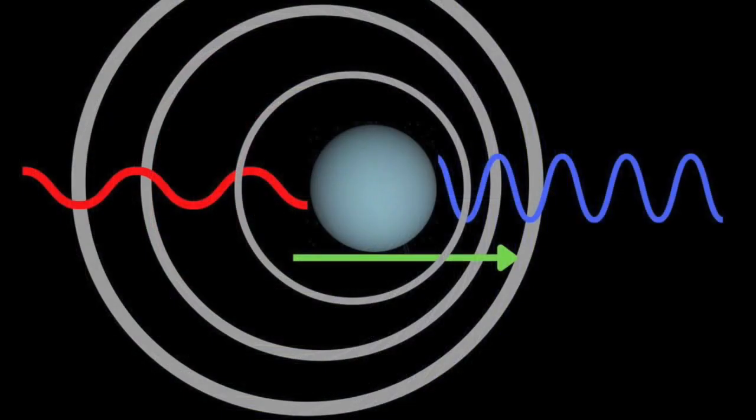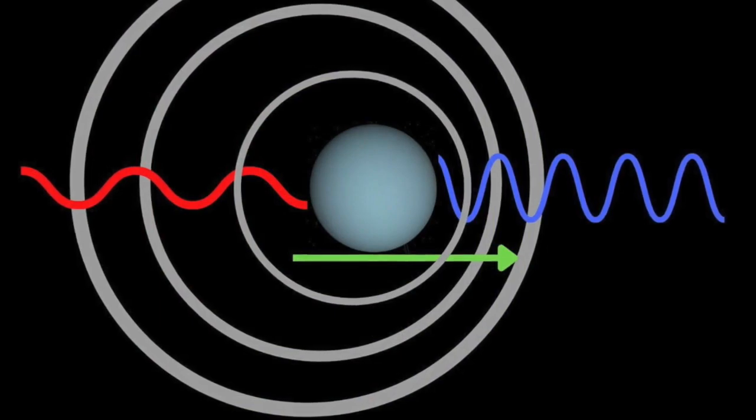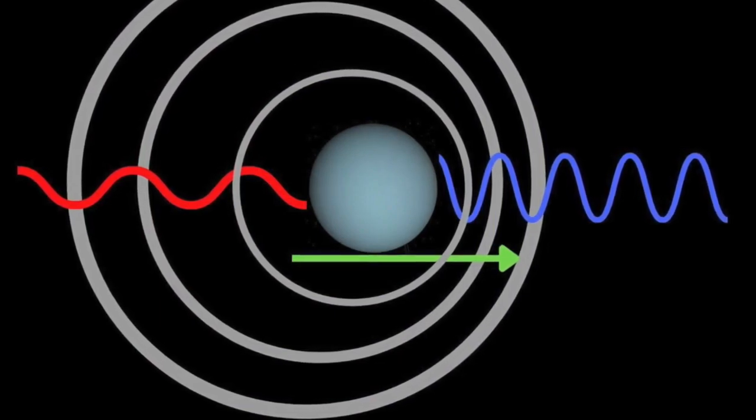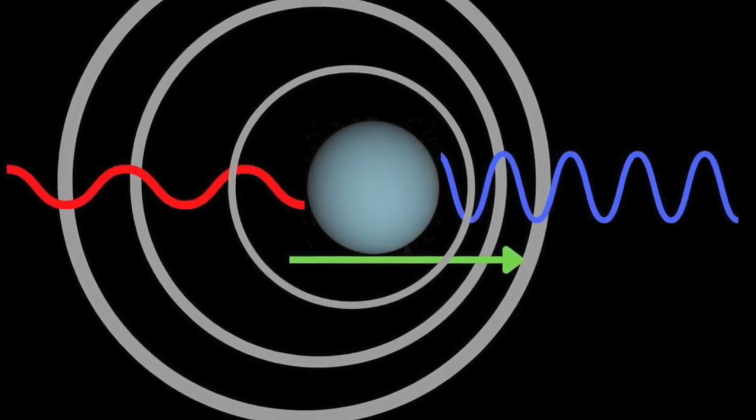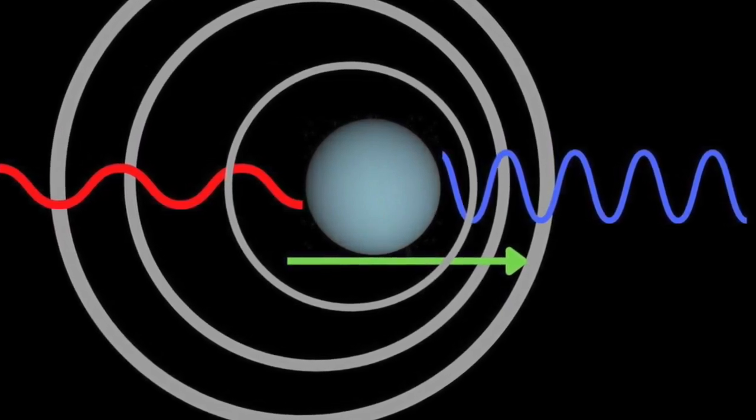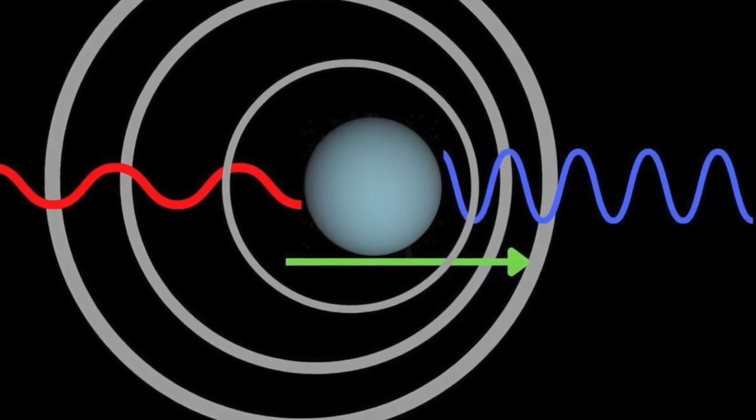Whereas a change in frequency of sound is heard as a change in the pitch of a note, a change in frequency in light is seen as a change in the color of light. Light of high frequency and short wavelength gives the sensation of color we know as blue. Light of low frequency and long wavelength gives the sensation of color we know as red.